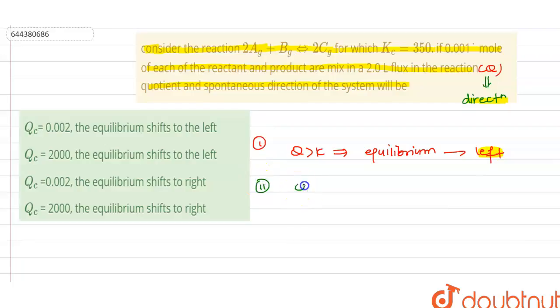Now there is another condition. If the value of Q is less than that of K, then in this case the equilibrium will tend towards the right direction and it will favor the product.